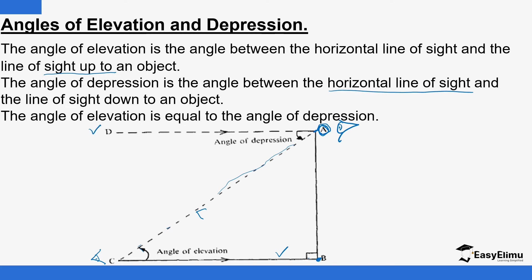Then we have the horizontal line of sight. In that case we are talking about Angle of Depression. For angle of depression, you move the horizontal line of sight down so you're able to see something that is down here. An eye at A trying to see something at C will have to move the horizontal line of sight down to that object at C. The angle made is the angle of depression. The two angles — elevation and depression — are normally equal, because the two horizontal lines are parallel to each other. So the two angles could be called alternating angles, the Z angles.